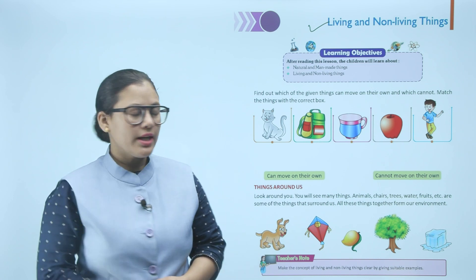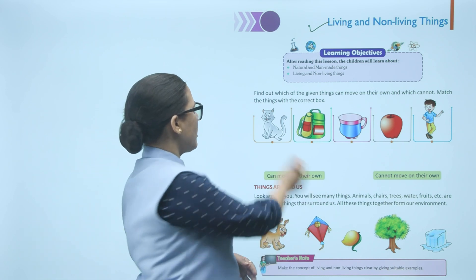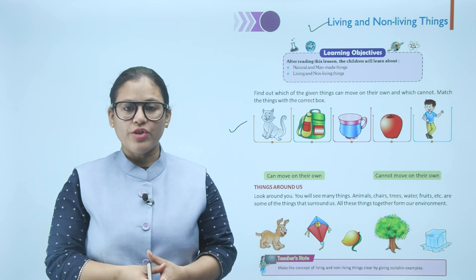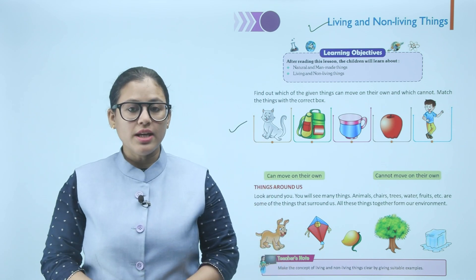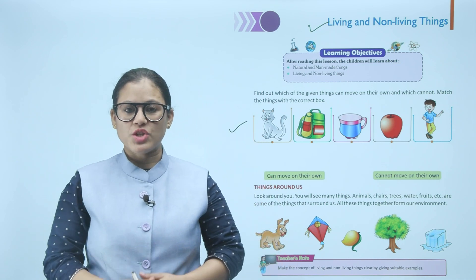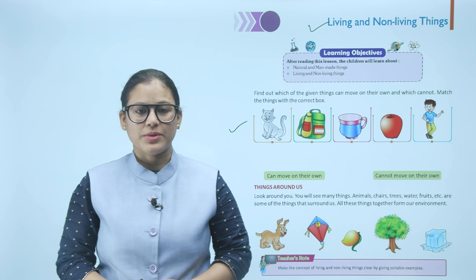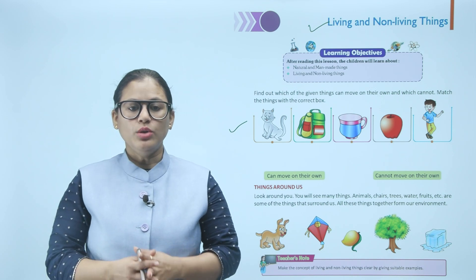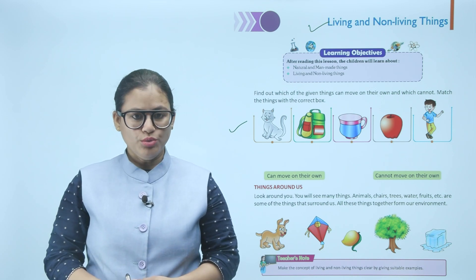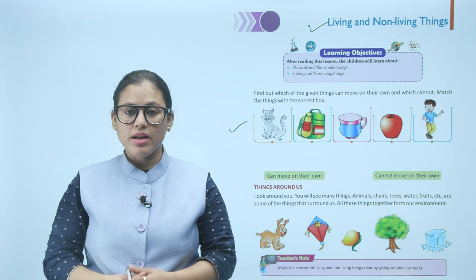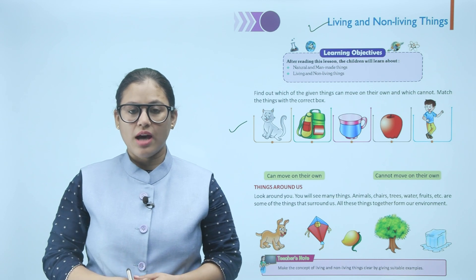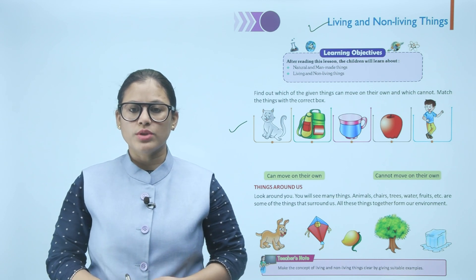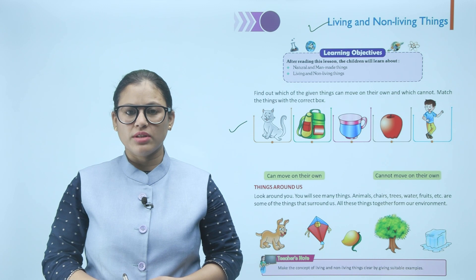Dekho, aapko kuch examples diye gaye hain ki kaunsi cheezein move kar sakti hain aur kaunsi nahi — to inhe hum match karenge khud se. Things around us: look around you, you will see many things — animals, chairs, trees, water, fruits, etc.